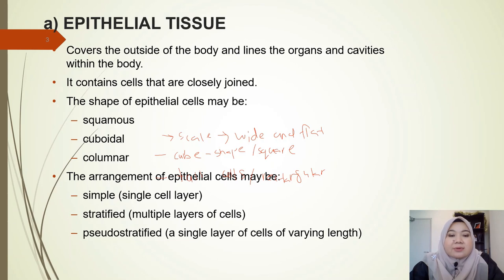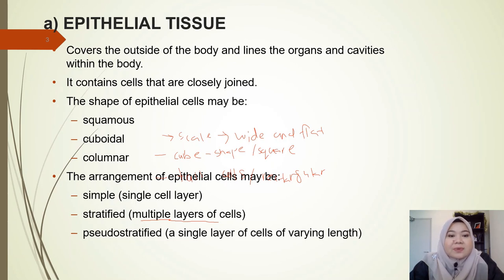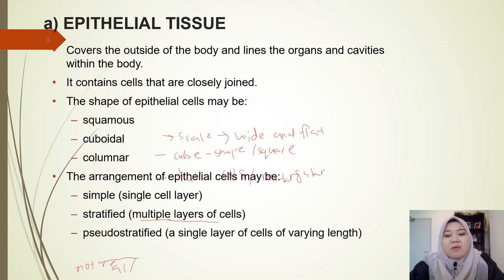The next characteristic is the arrangement. We also have three arrangements of epithelial cells. The first one is simple, which means a single cell layer only. Stratified means multiple layers of cells. And the last one is pseudo-stratified — 'pseudo' means not real, false or artificial.